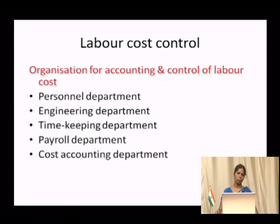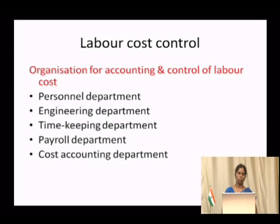Labor may be of two types: direct labor and indirect labor. Direct labor is labor which has been directly identified with the finished product. The services of the laborers can be directly identified with the product. In the garments industry, salaries given to a tailor come under direct labor costing, whereas salaries given to supervisors and inspectors come under indirect cost, which cannot be directly identified with the finished product.